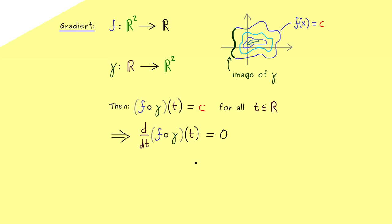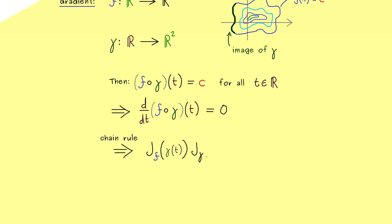And then we can do the same as in the last video. We can apply the multidimensional chain rule. This means we have a matrix product of two Jacobian matrices. So first we have the Jacobian matrix of f at the position gamma of t, times the Jacobian matrix of gamma at the position t.